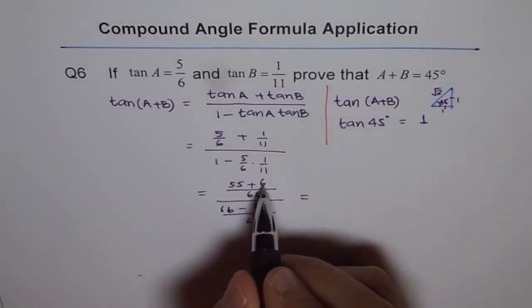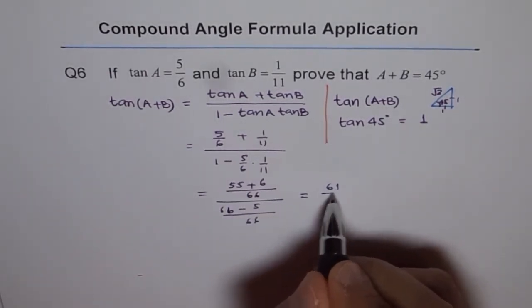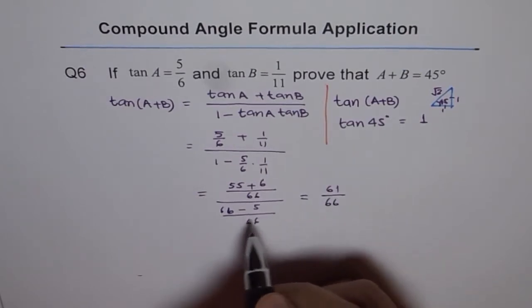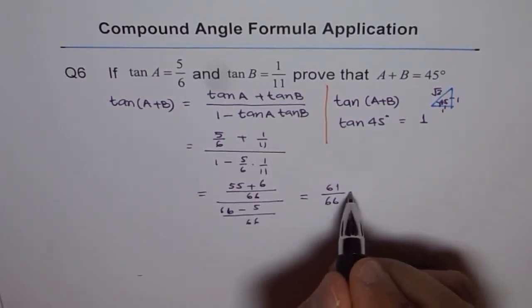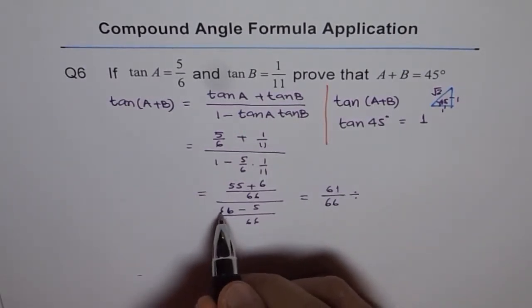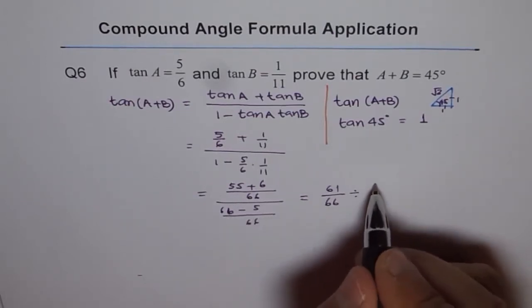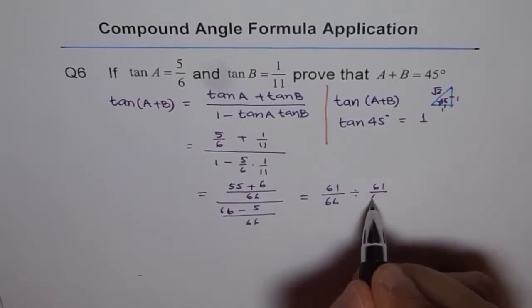Now, what is 55 plus 6? It is 61 divided by 66. Now the whole thing is divided by 66 minus 5 is 61 divided by 66.